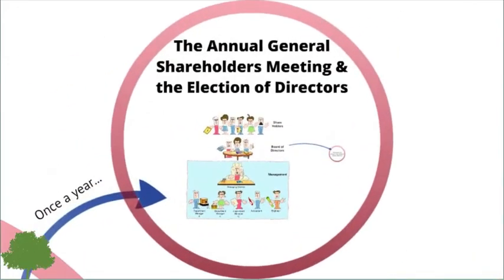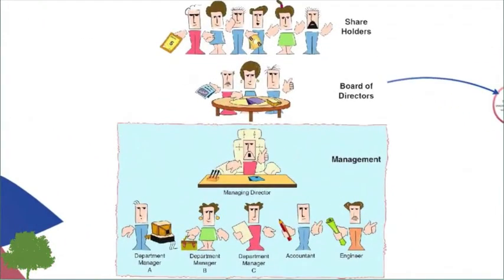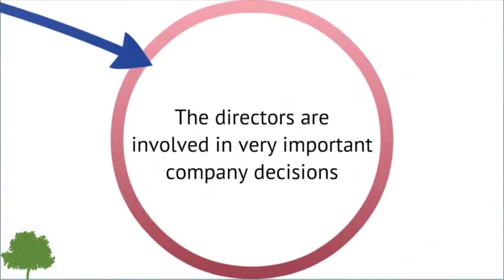The Annual General Shareholders Meeting and the Election of Directors. Once a year, the company arranges a general shareholder meeting, which includes an election for the company's board of directors. The directors are involved in very important company decisions, including those dealing with production and purchase strategies.